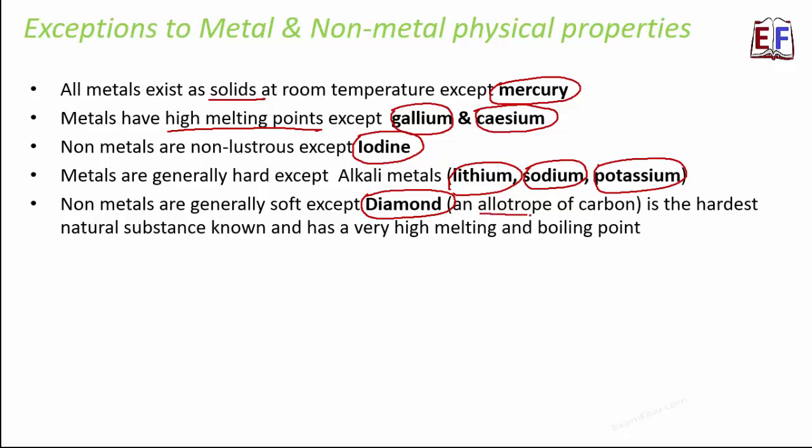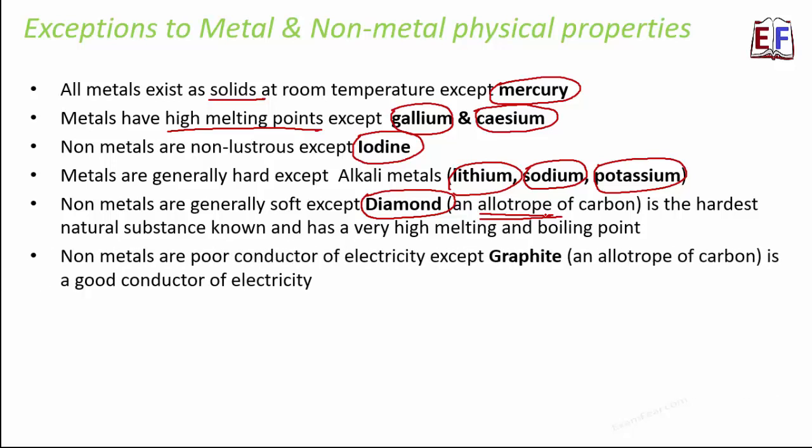You may have seen the word allotrope — carbon exists in many different forms and each form is called an allotrope. For example, diamond is an allotrope of carbon and graphite is an allotrope of carbon. Not every element has allotropes; allotropy is a property exhibited only by certain elements, and carbon is one of them. Diamond also has very high melting and boiling points, similar to metals — another exception for a nonmetal. Nonmetals are generally poor conductors of electricity, but the exception here is graphite, which is a good conductor of electricity.